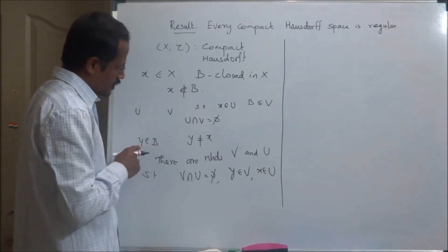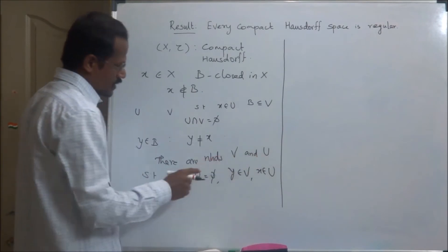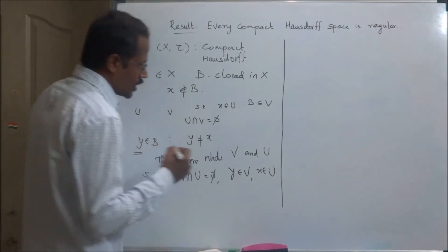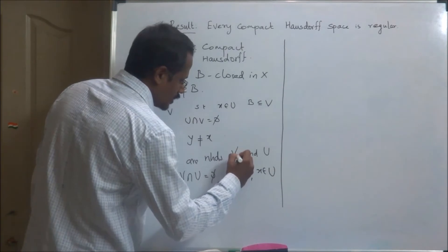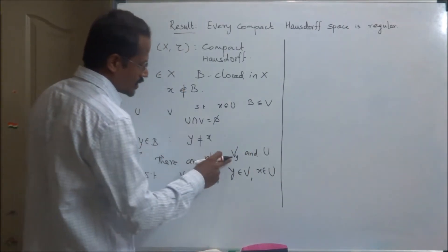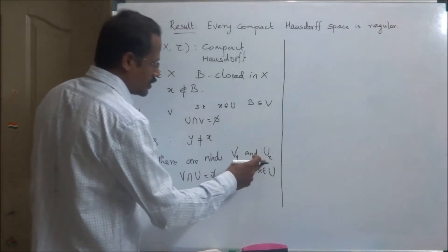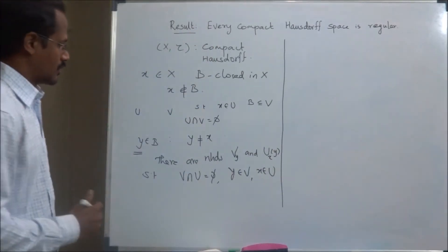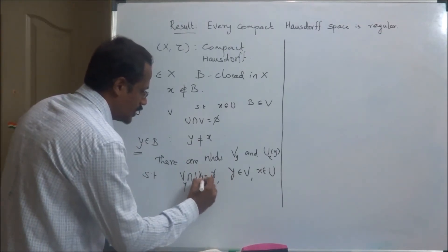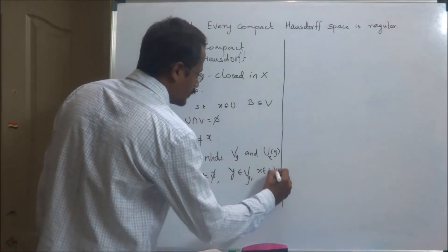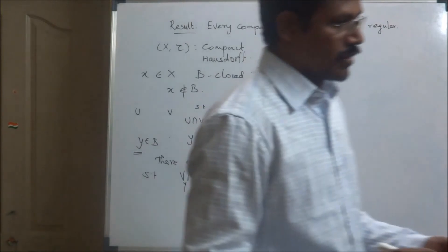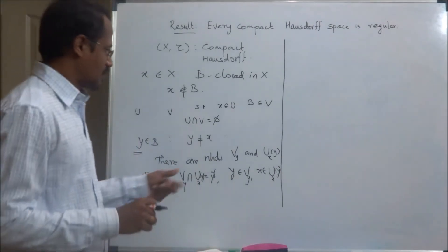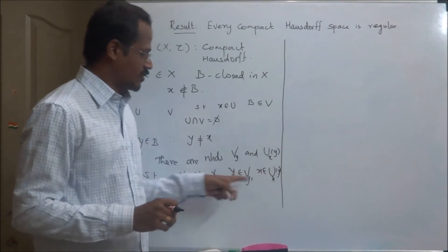Because the existence of V_y and U_x mainly depends on the point y varying over the set B, we use the notation V_y and U_x(y). So for each point y in B, there are neighborhoods V_y and U_x(y) which are disjoint, such that x is a point of U_x(y) and y is a point of V_y.